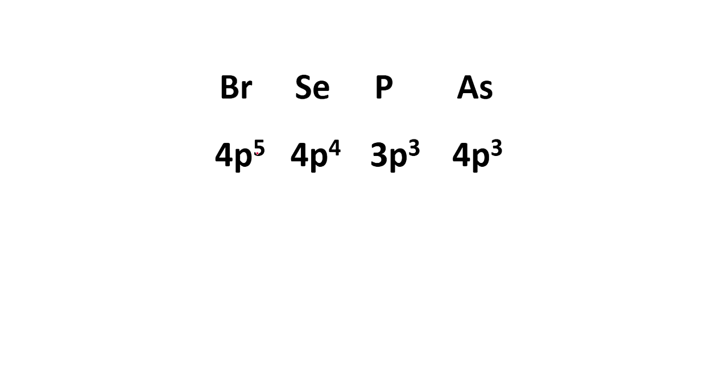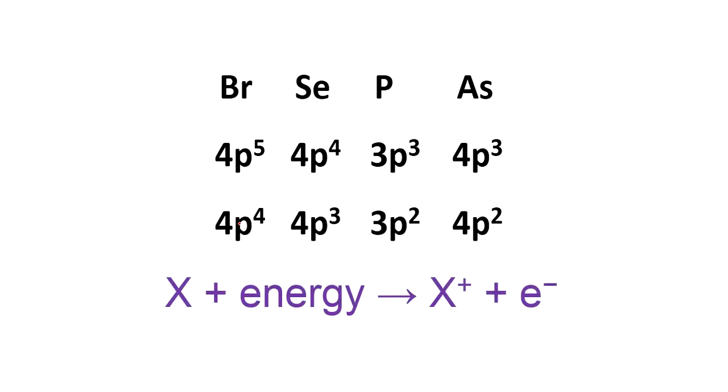If you are removing one electron from each of them, it will be like this. The first ionization energy will be for removing from this to this. In the case of selenium, after the ionization, it is having the most stable configuration.